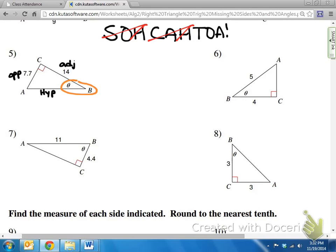So we're going to do tangent from theta. Again, because theta is a variable, we don't know what theta is, that's what we're trying to find. So tangent theta is opposite, which is 7.7, over adjacent, which is 14.